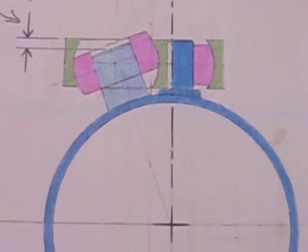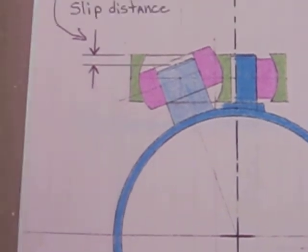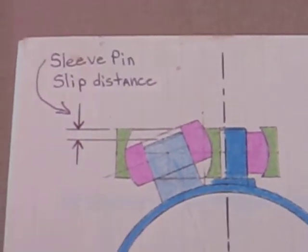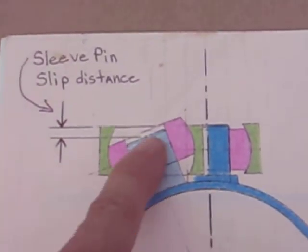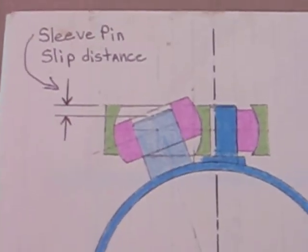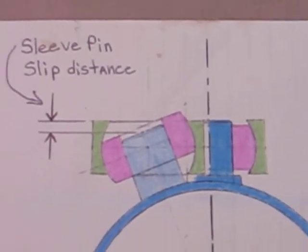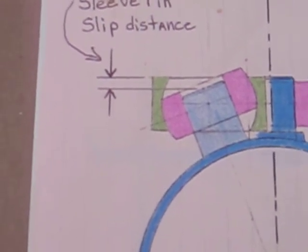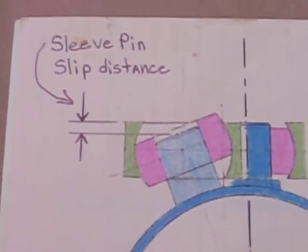But when the sleeve rotates to the side, as you can see here, it moves down to this position. It just rocks, but it has to move that distance away from center. And I call that sleeve pin slip distance.